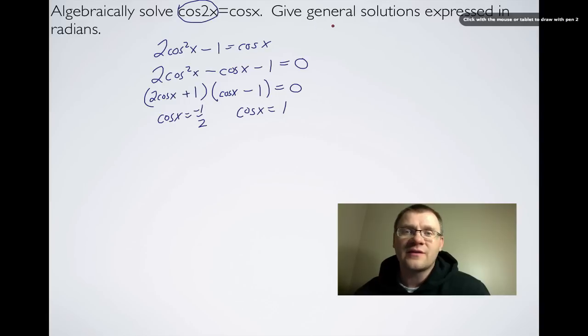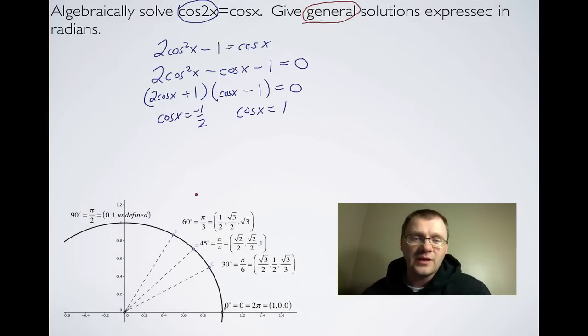So the other key thing here is that it says we need to give general solutions. So you have to remember how to give general solutions. So let's take a look at our unit circle, it'll help us out. Now we're looking for where cosx is equal to -1/2. So we also have to bring in the old CAST rule.